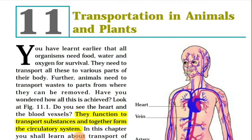We have learned earlier that all living organisms, whether animals or plants, need a continuous supply of different materials such as food, water, and oxygen for their survival. These materials must reach the various parts of an organism where they are needed. All living organisms also produce some waste materials like carbon dioxide as a result of chemical processes occurring in their body cells. These waste materials are harmful and have to be removed from the body. So it is necessary that all living organisms have some means of transporting materials from one part to another within their body.